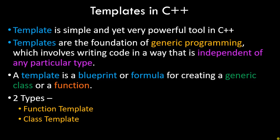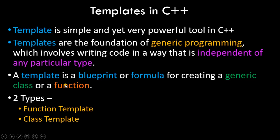So what exactly is a template in C++? Templates are simple yet very powerful tools in C++ and they help us in generic programming. Templates are the foundation of generic programming, which involves writing code in a way that is independent of any particular type — and by type I mean the data type. A template is a blueprint or a formula for creating a generic class or a function.